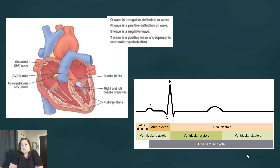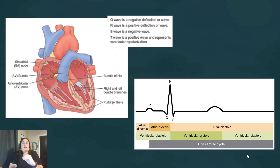The heart pumps blood using electrical signals that contract the cardiac muscle. It does this through specialized self-exciting cells starting at the SA node — the sinoatrial node — found in the right atrium. This is the natural pacemaker of the heart. It sends out a depolarization signal to the atria and also to the AV node, which is the connection between the atria and the ventricles. The signal pauses at the AV node to allow the atria to contract first while the ventricles relax, then signals the ventricles to contract as the atria relax.